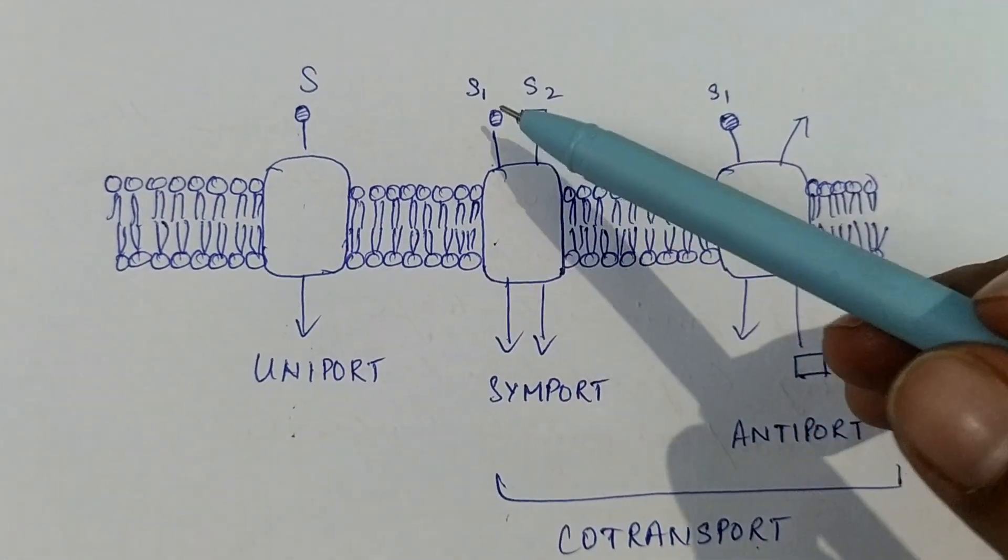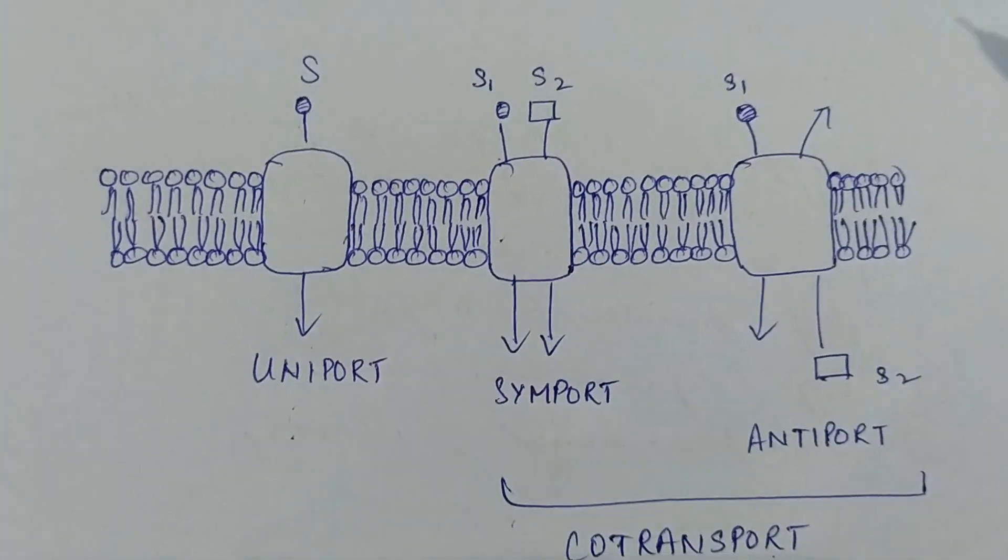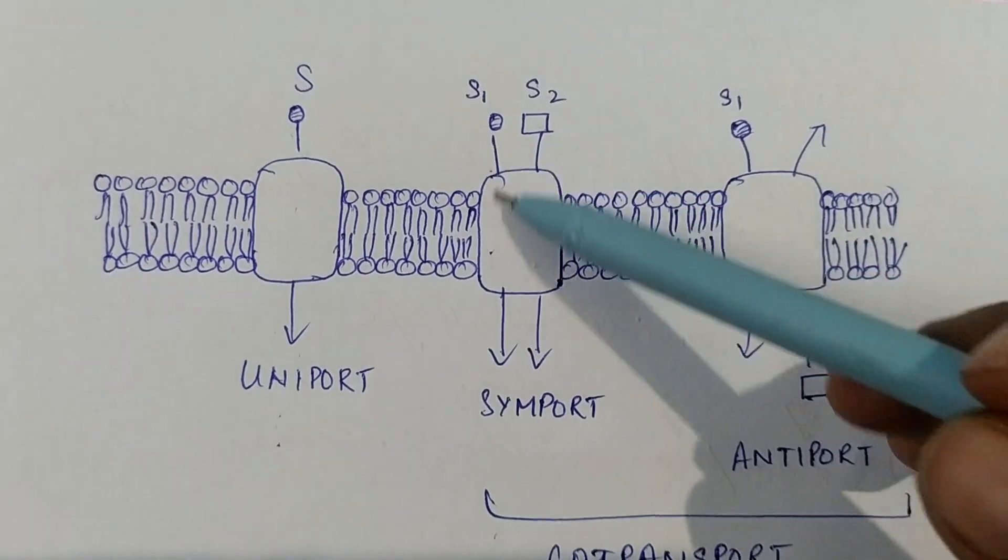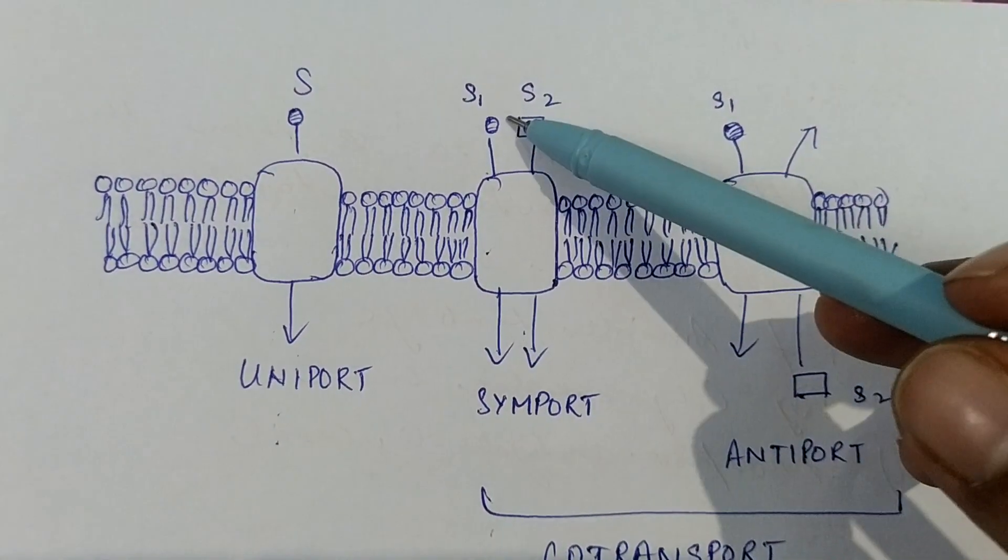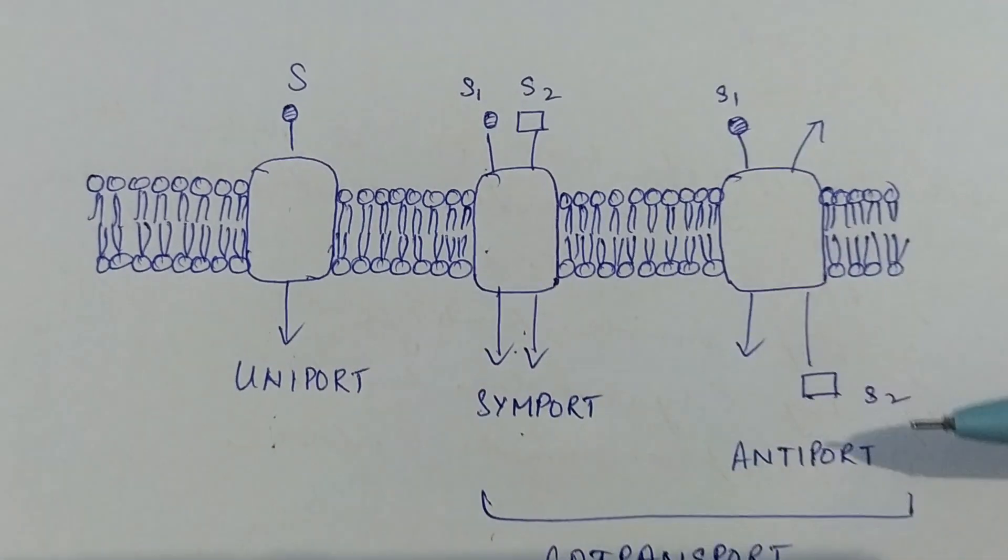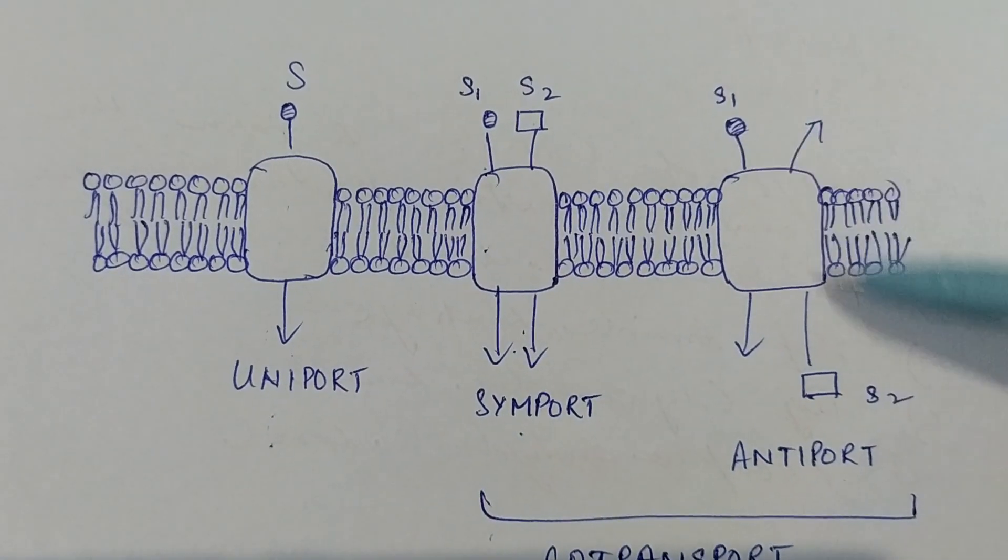In symport, two different molecules - two different solute molecules or ions or whatever they may be - they move in the same direction, as you can see indicated by this diagram. And antiport is where there's a simultaneous movement of two different molecules but in opposite directions.